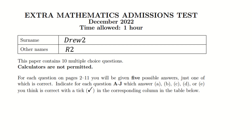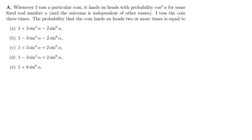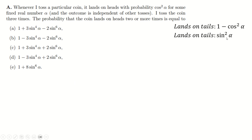These are the extra math questions from 2022, so let's just go ahead and do them. Toss of the coin: probability of landing on heads is cos² α, which means the probability of landing on tails is 1 minus cos² α, which you could write as sin² α.